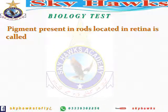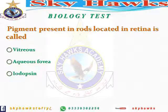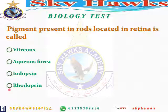Next question: the pigment present in rods located in the retina is called what? Options are: vitreous, aqueous, iodopsin, rhodopsin. Remember: since it's rods, the pigment is rhodopsin.